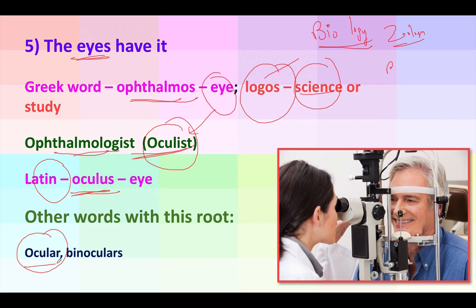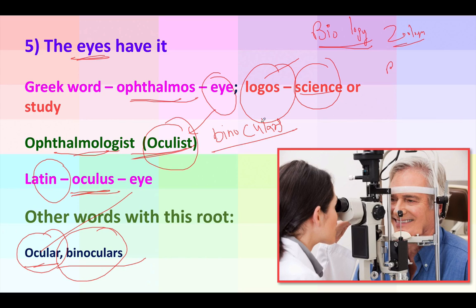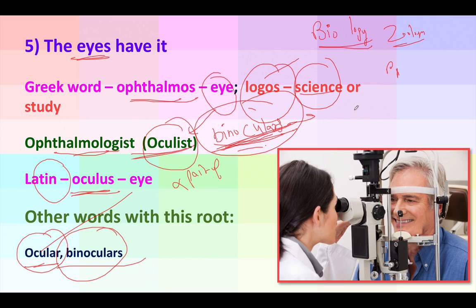Some other words from the root oculus: ocular means anything related to the eye, as in 'my ocular muscles have become weak.' What about binoculars? They are used to see something far away and enlarge it for clarity. Note that the word is always 'binoculars' — not 'binocular' in singular. If you want to refer to one, say 'a pair of binoculars.' If you say just 'binoculars,' it means many.